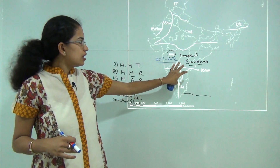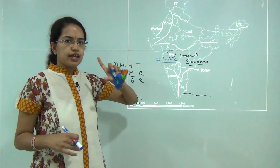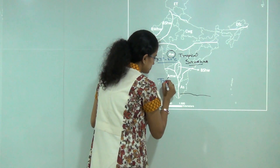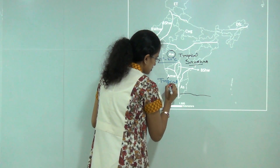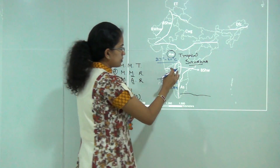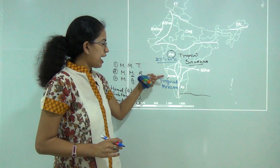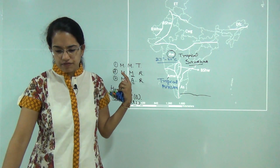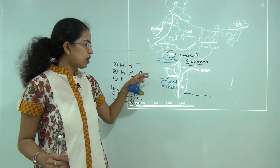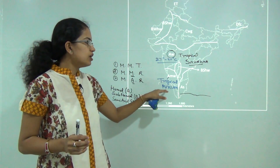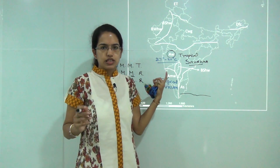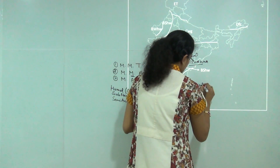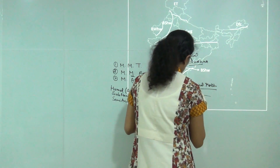Within the A (humid) classification, we have two more: AMW and AS. AMW is the tropical monsoon region, mainly found in the coastal areas of Karnataka and most of Kerala. Rainfall here is heavy during the southwest monsoon season with dry winters, and the climate is mostly humid.